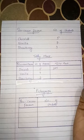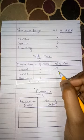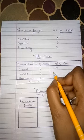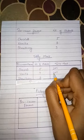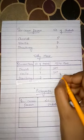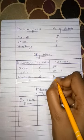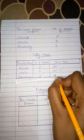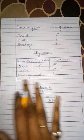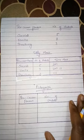Chocolate has 5 — that is one complete bundle. Vanilla has 7 — one complete bundle of 5, then 2 more lines: 1, 2, 3, 4, 5, 6, 7. Strawberry has only 3 lines: 1, 2, 3. This is our representation of information by tally chart, with totals 5, 7, and 3.